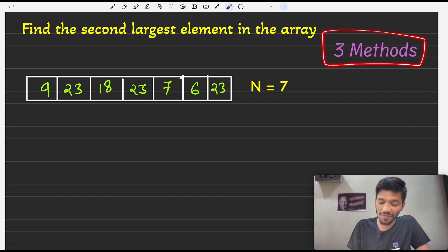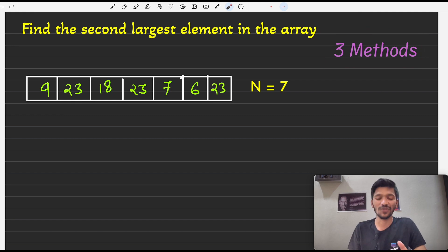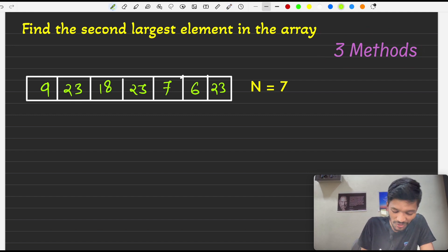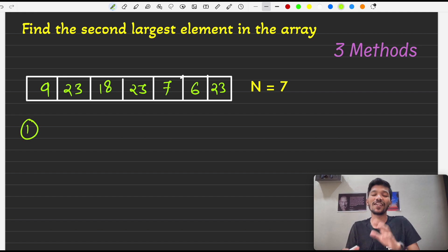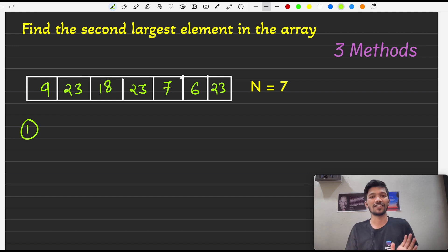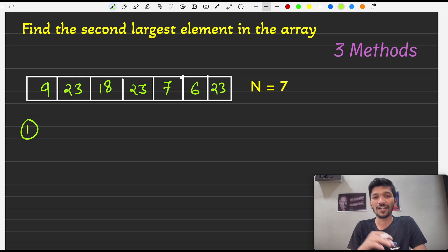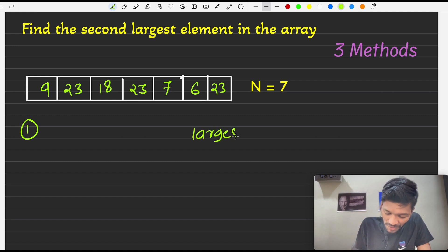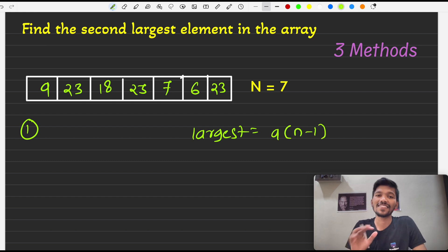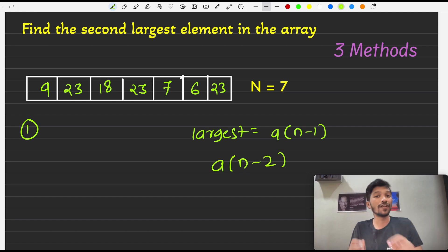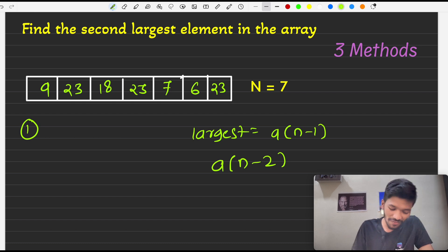We are going to solve this problem using three different methods. The first solution that comes to mind is: in the previous lecture we came to know that to find the largest element we can simply sort the array, and the element at the last index will always be the first largest element. So similarly, can we say that the second largest element will always be present at index n minus two? Let's see.